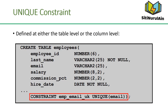UNIQUE constraints can be defined at the column level or table level. You define the constraint at the table level when you want to create a composite unique key. A composite key is defined when there is not a single attribute that can uniquely identify a row — in that case, you can have a unique key composed of two or more columns whose combined value is always unique and can identify rows. The example in the slide applies the UNIQUE constraint to the EMAIL column of the EMPLOYEES table; the constraint is named EMP_EMAIL_UK.